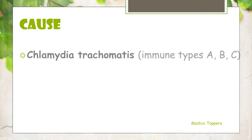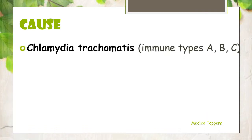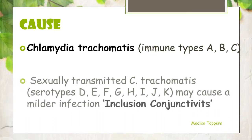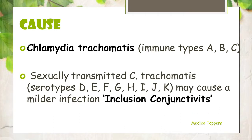First, causation. There are two different types of causation. First is Chlamydia trachomatis and the immune types are A, B, and C. Then comes sexually transmitted Chlamydia trachomatis and the serotypes belong to D, E, F, G, H, I, J, and K, and it may cause a milder infection which will be like inclusion conjunctivitis. Nothing will be serious.